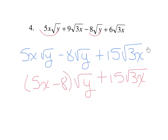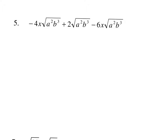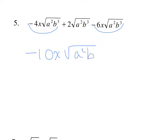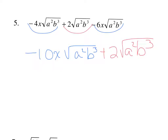As an instructor I'm okay with either one of those answers. On number five we have radicands that are identical — a squared b cubed — they are all a squared b cubed. However the middle term does not have an x, so I can add the first and third terms: negative 4x plus negative 6x makes negative 10x square root of a squared b cubed, and the middle term just tacks on to the end.